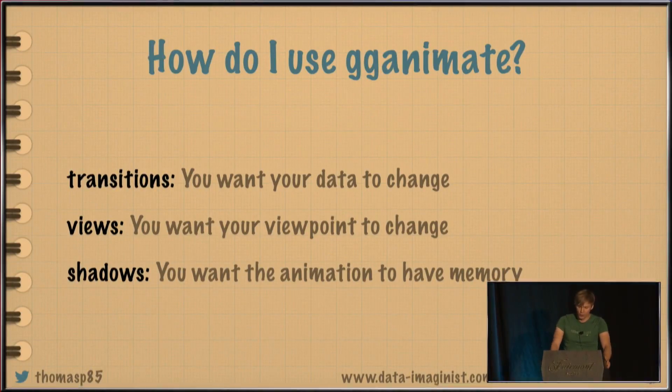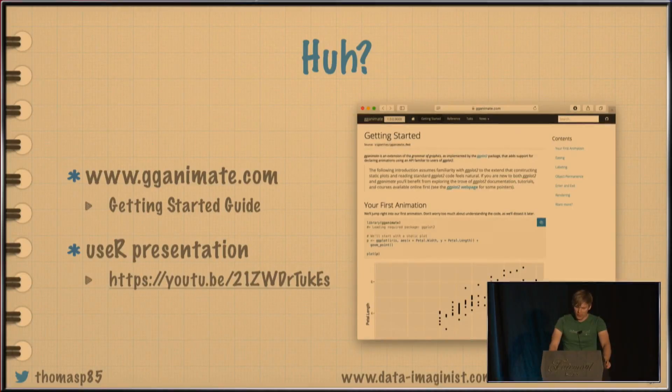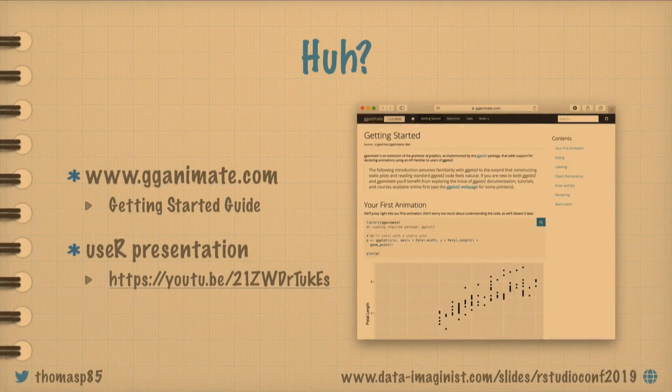Probably the most important part is what's called transitions, which is you have some data you wanted to change over the course of the animations. Then you need a transition. There's also something called views, which is you want your view, which is the y and x scale, to change during the animation. How do you specify that? And then there's something called shadows, which is completely different, which is you want the animation to have some sort of memory.